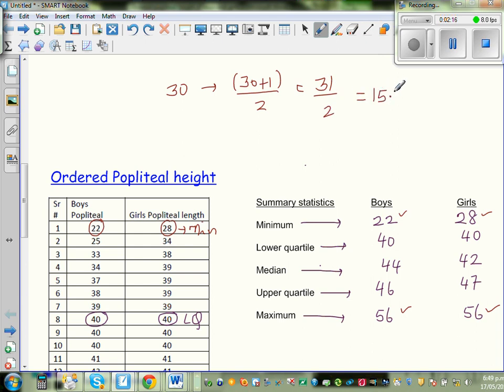So when you can't have a 15 point, you have either the 15th data or the 16th data. So what does this mean? This means you have to take the average of the 15th and the 16th data.